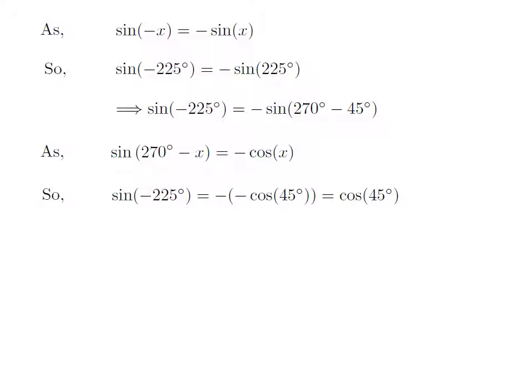Let us apply the above identity for sine of 270 degrees minus 45 degrees. Here, x is 45 degrees. So, sine of minus 225 degrees is equal to minus of minus cosine of 45 degrees, which is equal to cosine of 45 degrees, as minus of minus is plus.